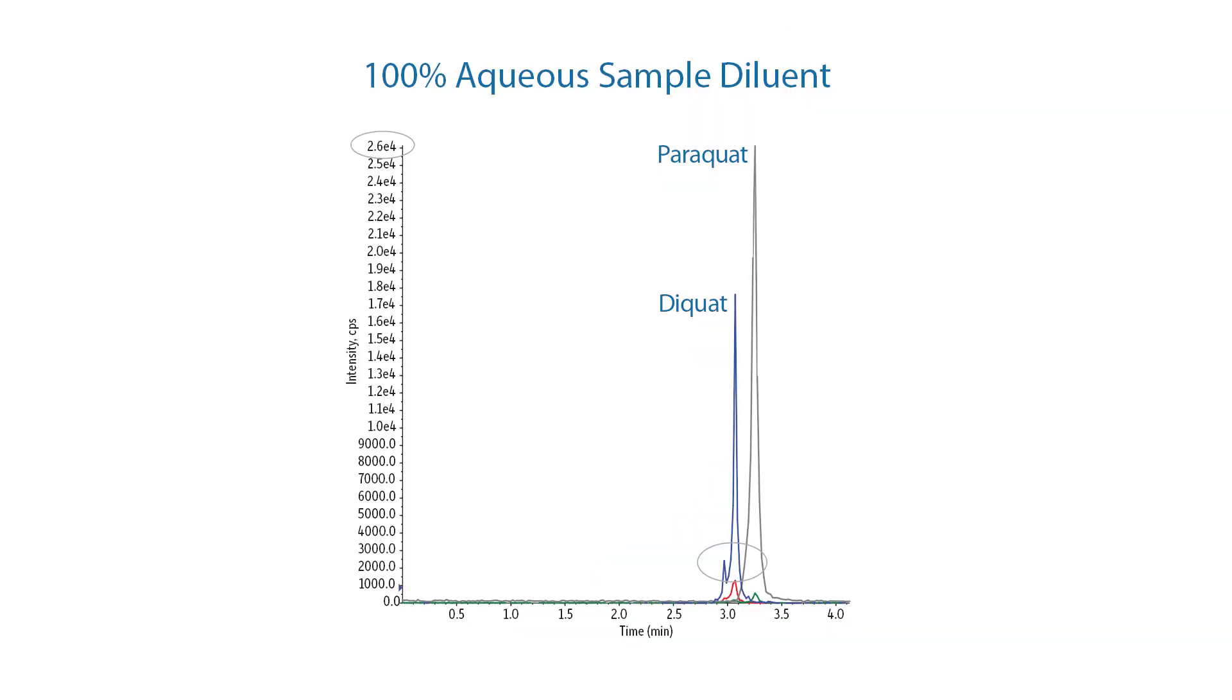As you can see in this example, the analysis of diquat and paraquat using the wrapped HILIC silica column.